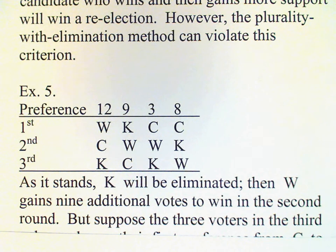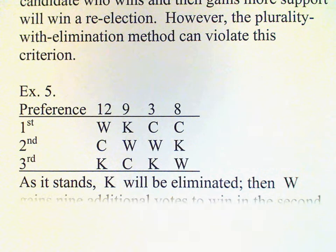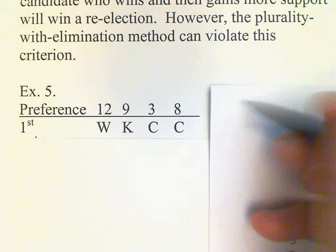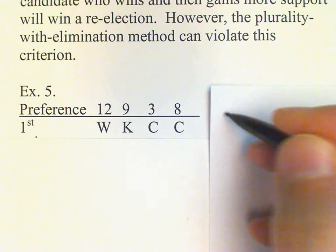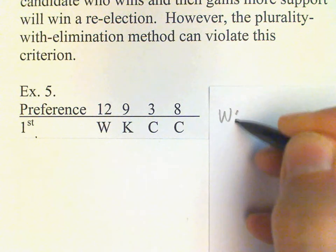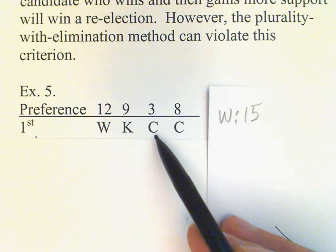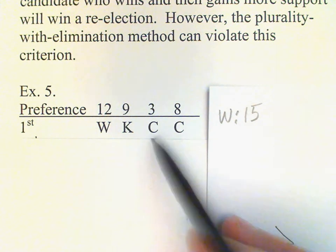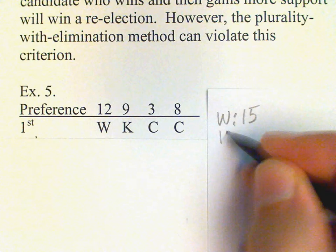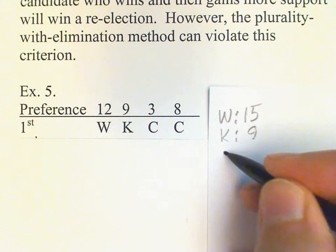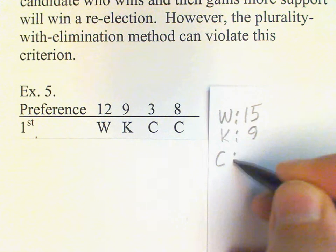So what does the preference table look like now? W has 15 — remember, those votes are changed to W — K still has 9, and C has 8.